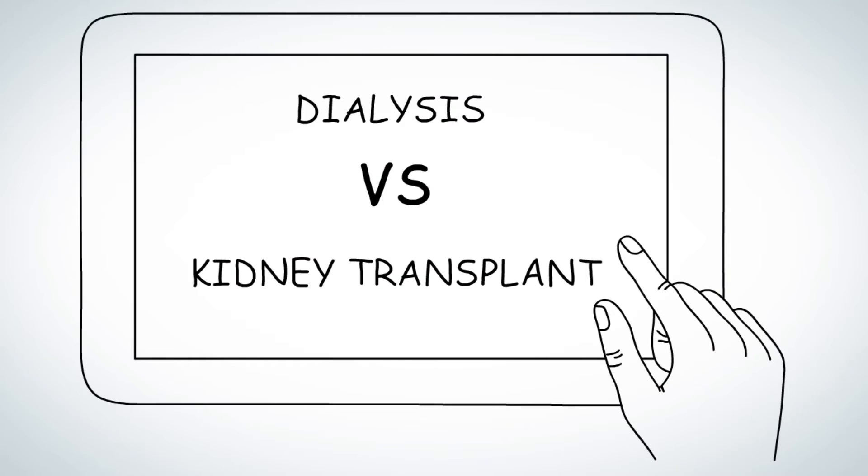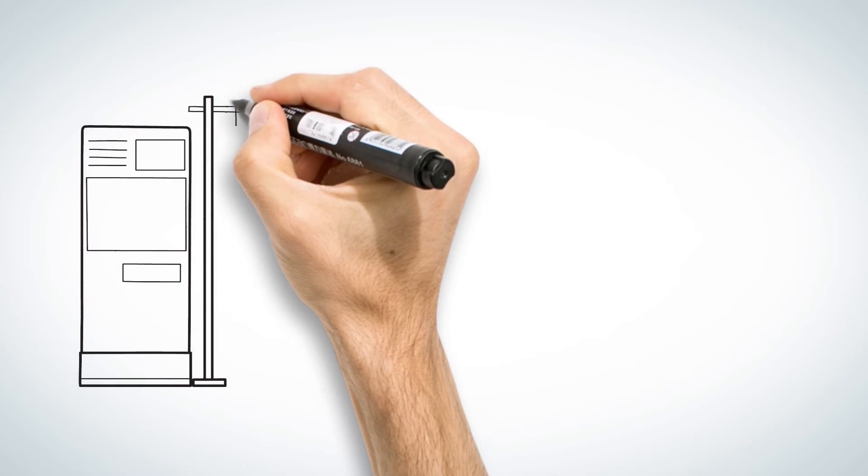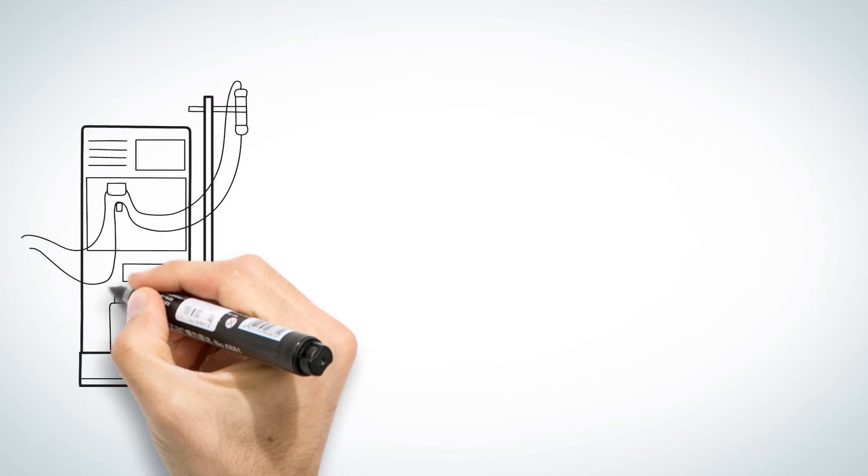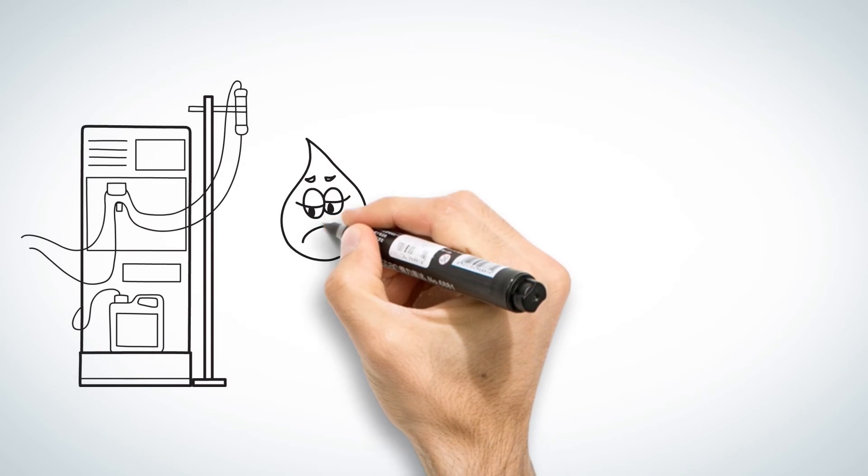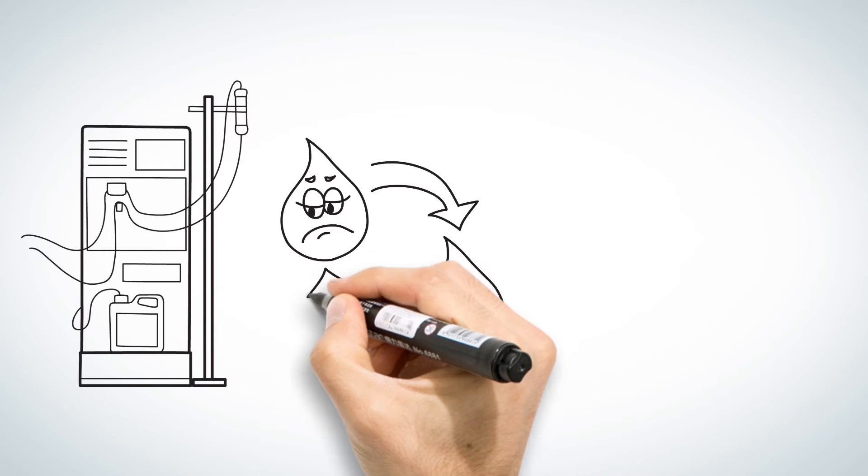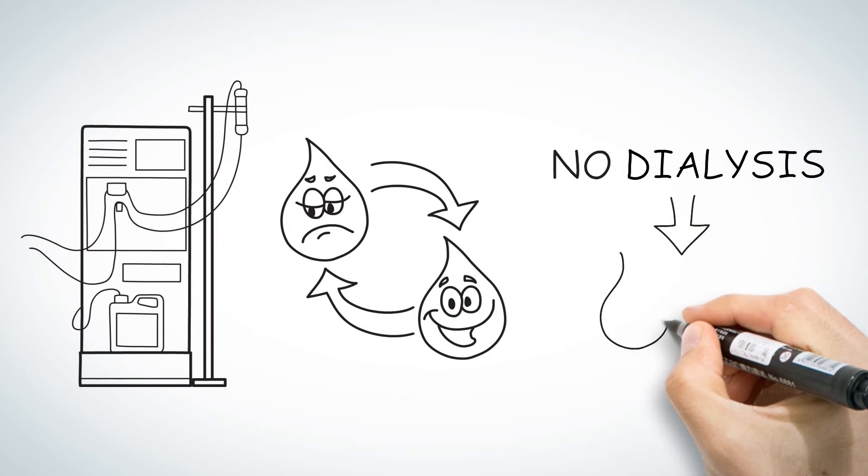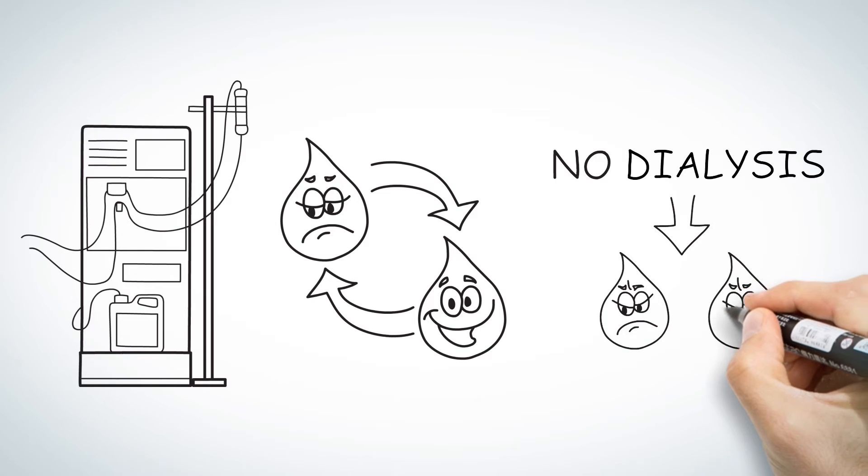Here, let me explain. As you know, the dialysis machine you are hooked up to cleans your blood by filtering out harmful wastes, salt, and excess fluids. Even though it does some of the work of healthy kidneys, it will never cure your kidney disease. Now, if you decide to stop your dialysis treatment, your kidneys would not function properly. You need at least one healthy kidney to live, so I don't need to tell you what would happen without dialysis.